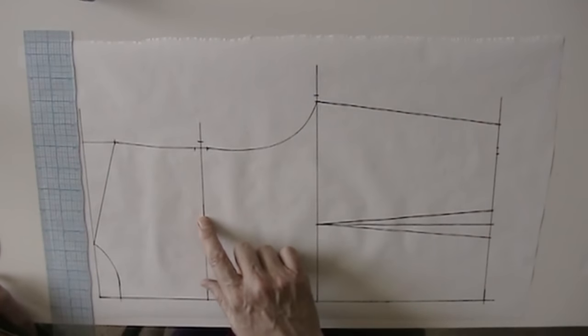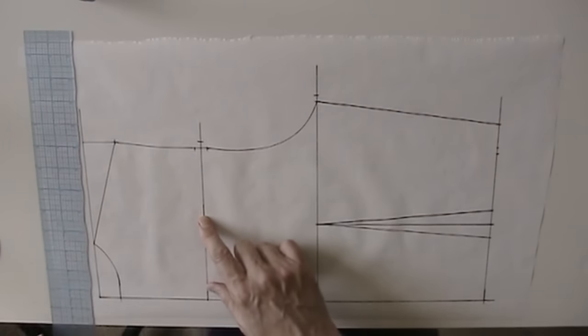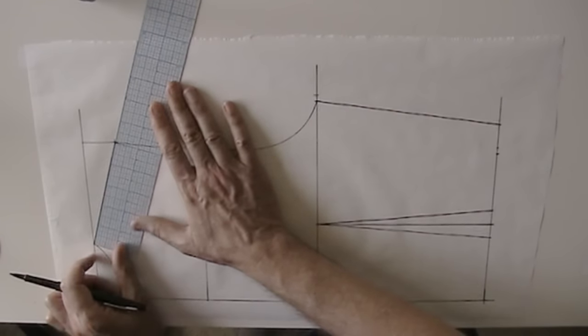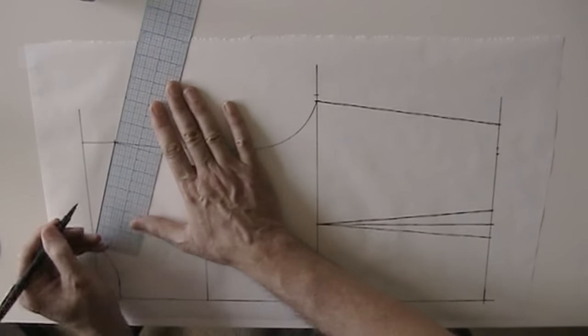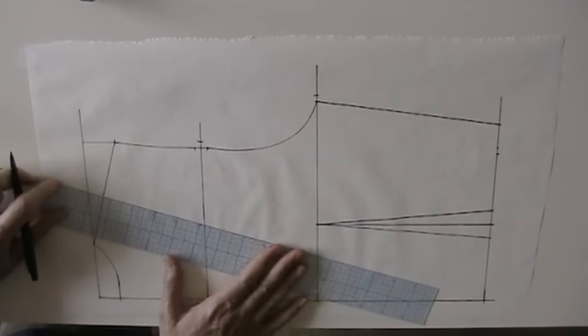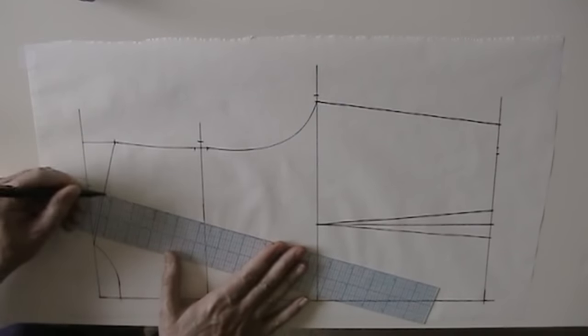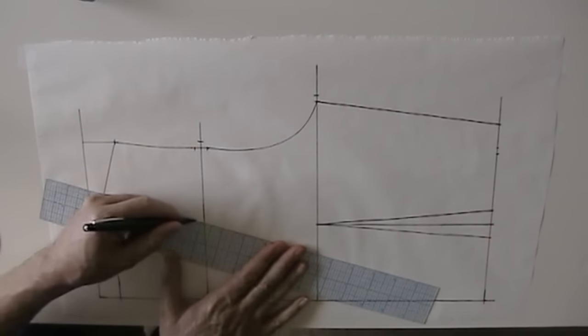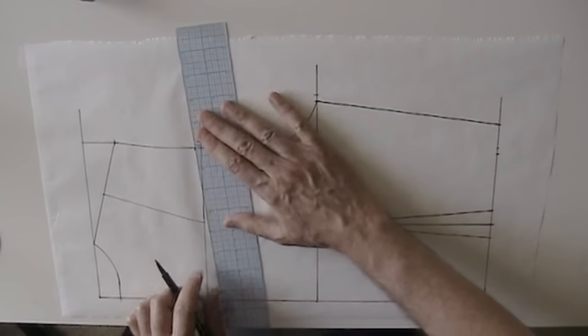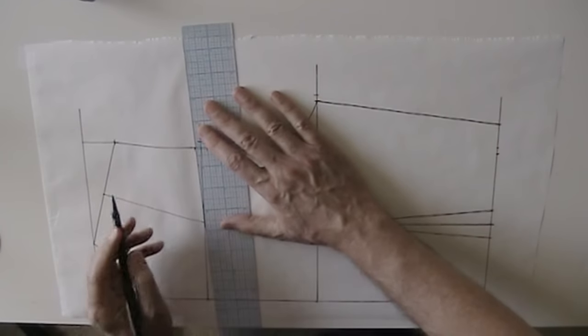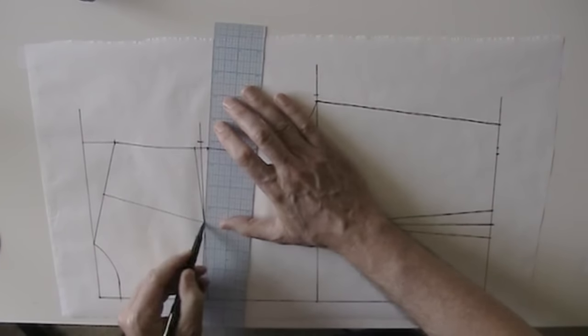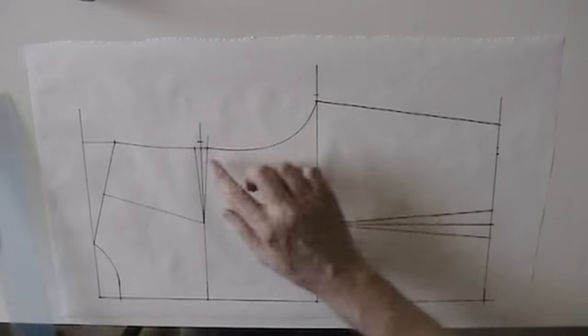Now I need to figure out how deep to make this dart. The easiest way to do that is to mark a point at the halfway point of your shoulder. My shoulder is five inches, so half of that is two and a half and square a line from there to your cross back line. And here's where your dart should end. Now I'm just going to connect these points with lines. There's my dart.